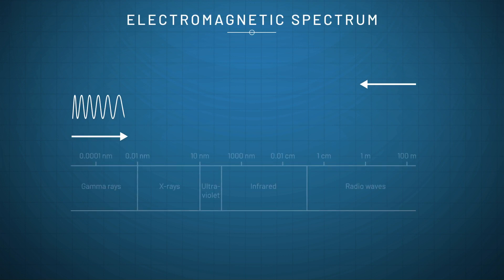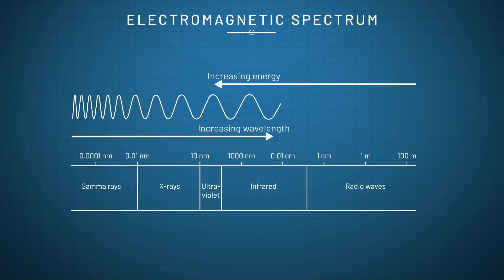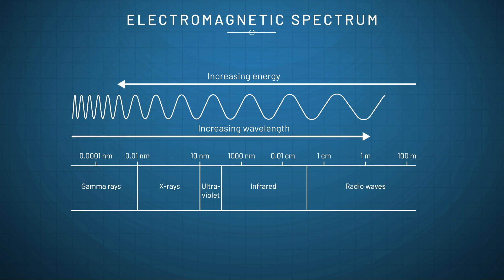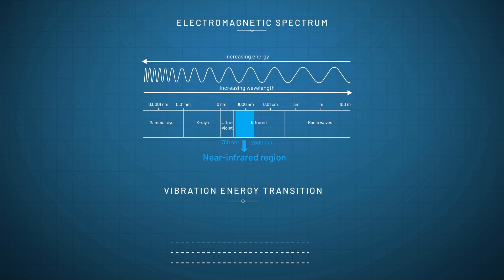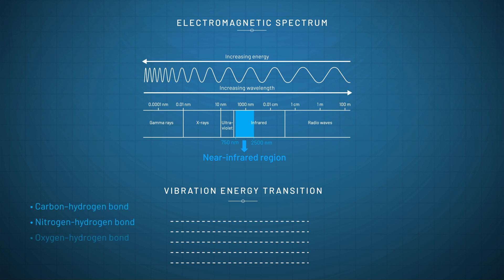Near-infrared reflectance spectroscopy uses electromagnetic radiation with a wavelength between 750 and 2,500 nanometres. The absorption of near-infrared is overtones or combinations of the stretching bands which occur in the mid-infrared range between 3,300 and 5,800 nanometres. The bonds involved are usually those of carbon-hydrogen, nitrogen-hydrogen, or oxygen-hydrogen stretching.